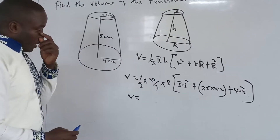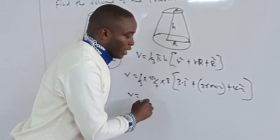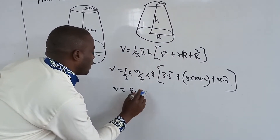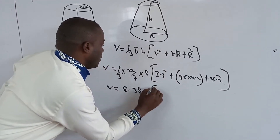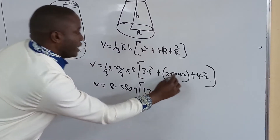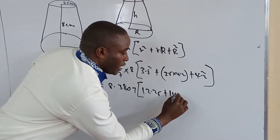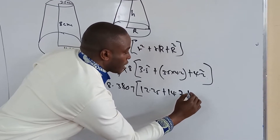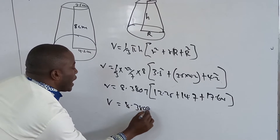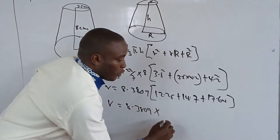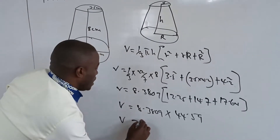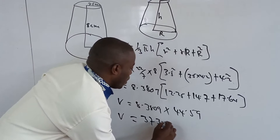So our volume equals: one-third times 22/7 times 8 gives us 8.3809. Then 3.5 squared gives 12.25, plus 3.5 times 4.2 gives 14.7, plus 4.2 squared gives 17.64. You add all of these together to get 44.59. So when you multiply, the volume becomes 8.3809 times 44.59, which equals approximately 373.7 centimeters cubed.